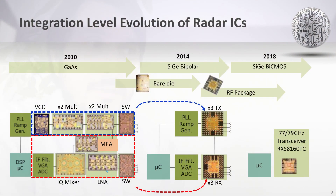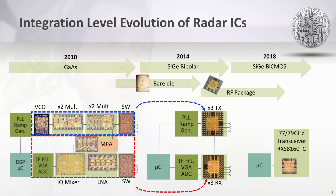When we look at the evolution of radar ICs over the years, over 10 years ago radar systems were realized using discrete components such as VCO, frequency multipliers, power amplifiers, and so on, integrated on a PCB. In the next step, these components were integrated into transmitters and receivers, then into large complex transceivers. And now there are efforts to integrate the transceivers with microcontrollers. Therefore, CMOS technologies might be very attractive for realization of millimeter wave radar transceivers.